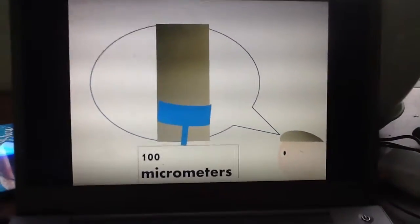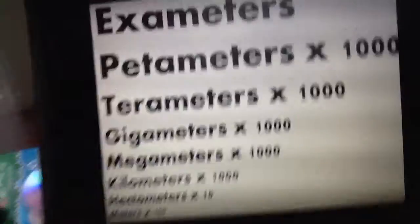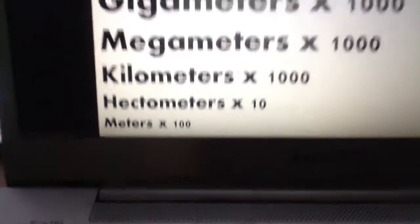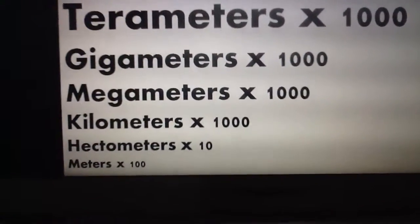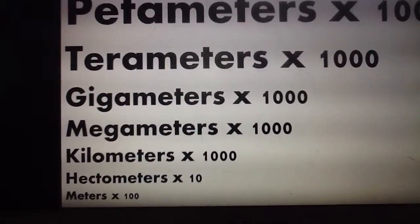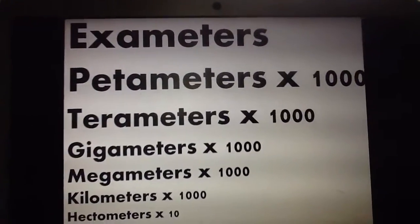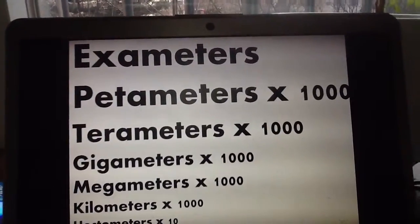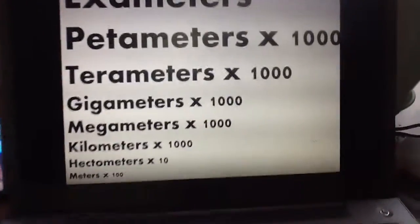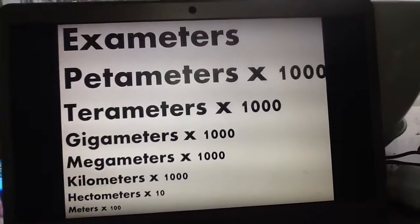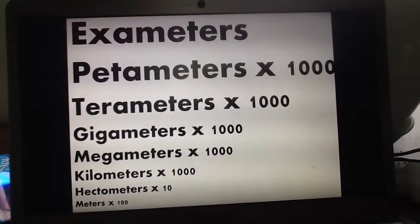Let's go to the big phenomenon. Look at this. Meters times 100 is hectometers, times 10 is kilometers, times 1000 is megameters, times 1000 is gigameters, times 1000 is terameters, times 1000 is petameters, times 1000 is hexameters, and you can go to yottameters or zettameters and so on.